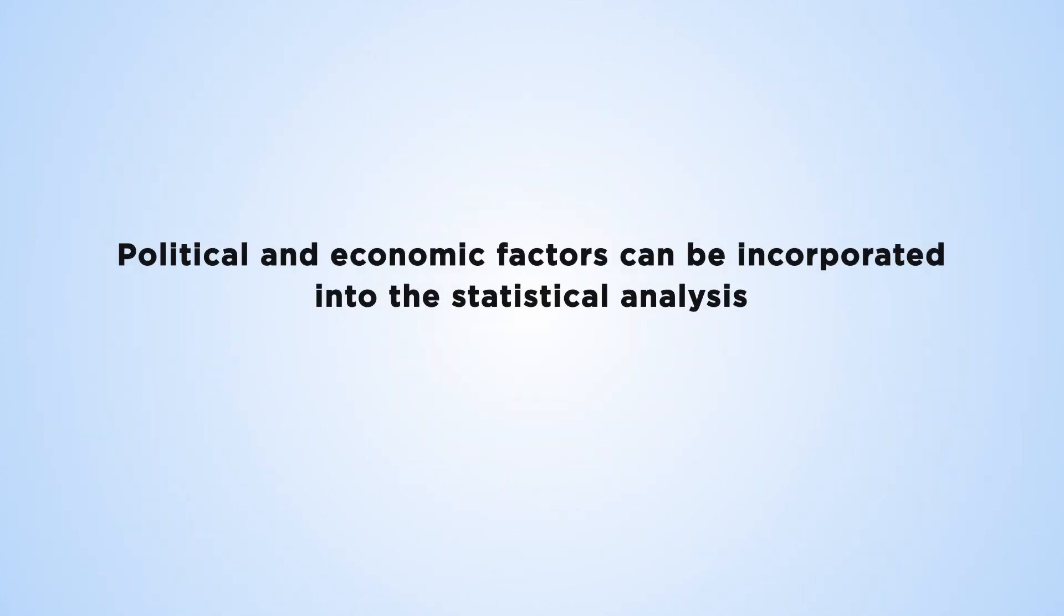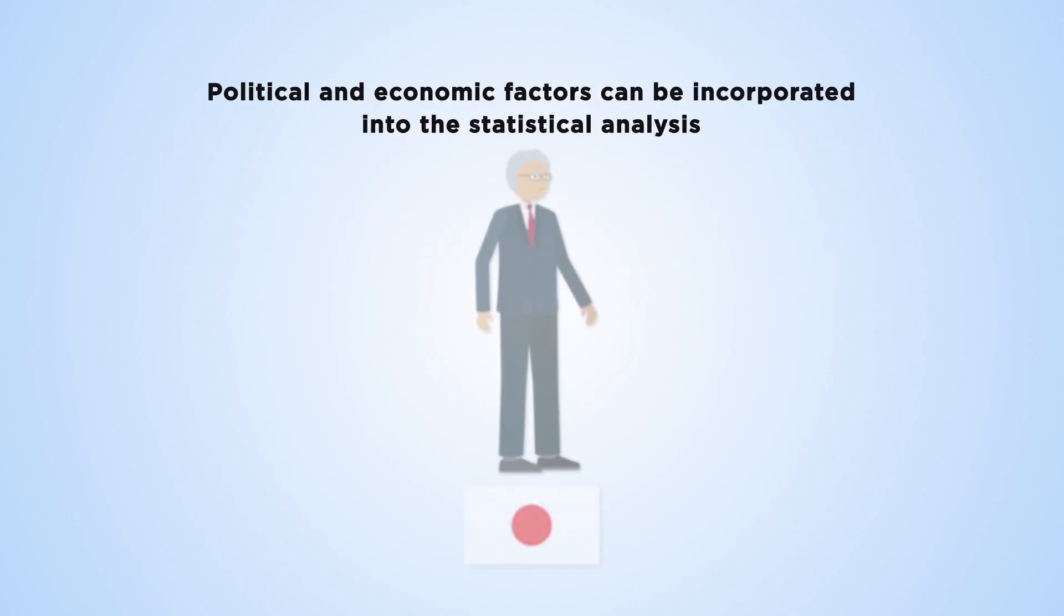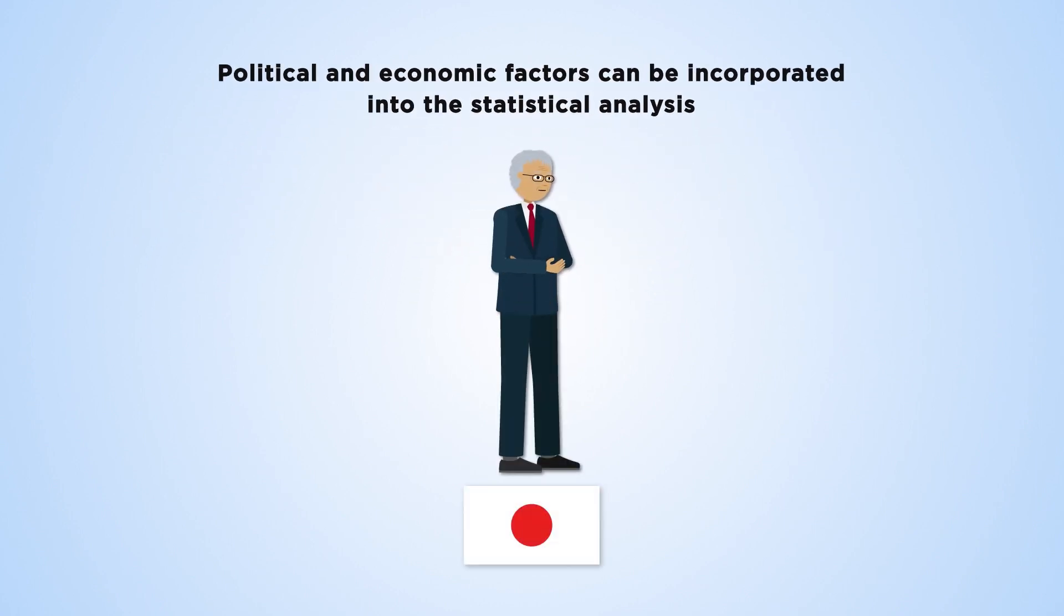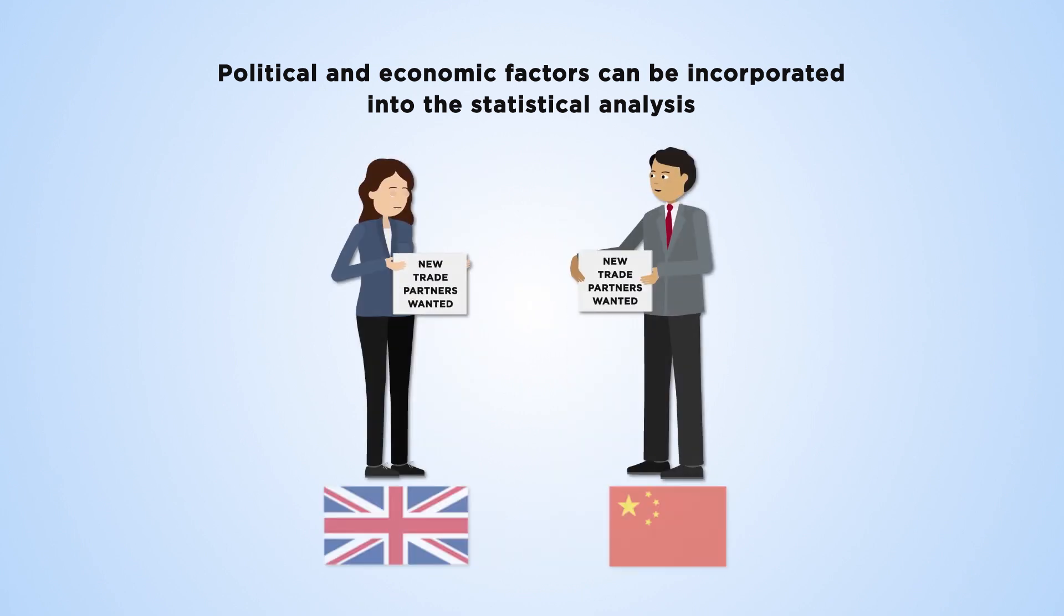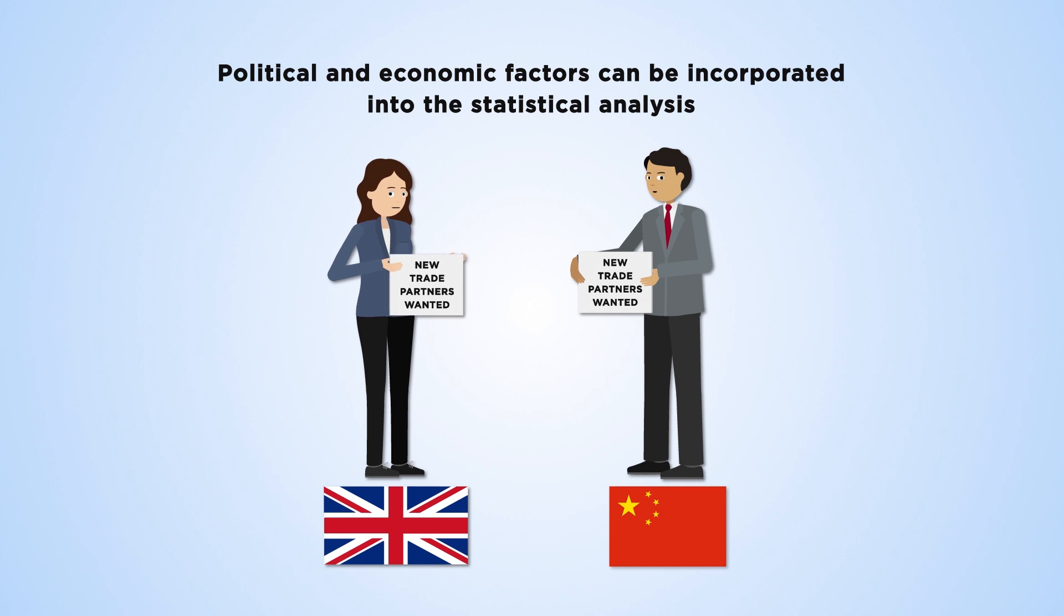We can also incorporate political and economic factors into the statistical analysis. There may be country-specific policies. For example, Japan withdrew itself from the arms trading network in the Cold War period. Germany and Canada maintain relationships with chosen trade partners, while the UK and China look for new partners.